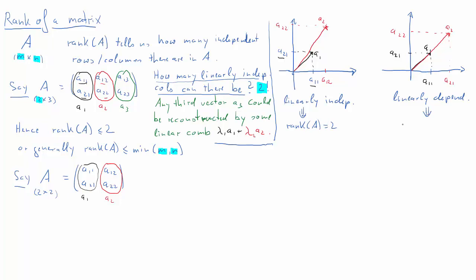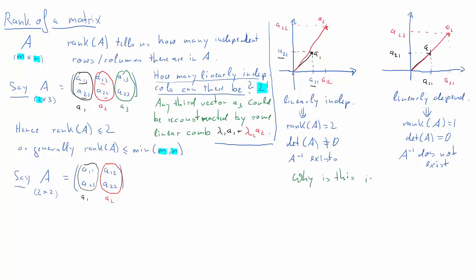Associated with these two situations are the following facts. On the left-hand side, if you have linearly independent vectors, the rank of matrix A is going to be 2. If they are dependent, the rank is going to be 1. In the linearly independent case, the determinant of A is unequal to 0; in the dependent case, the determinant is 0. For the independent case, the inverse of A exists; in the dependent case, the inverse of A does not exist. It's very important to associate these facts with the two cases.